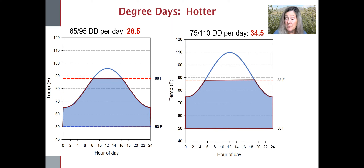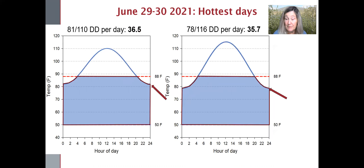When the temps ramp up a little bit more, we get more degree days per day, but not proportionally the same number because the horizontal cutoff is at the upper threshold. And just for fun, I picked the two hottest days this year at the Sunrise Research Orchard.